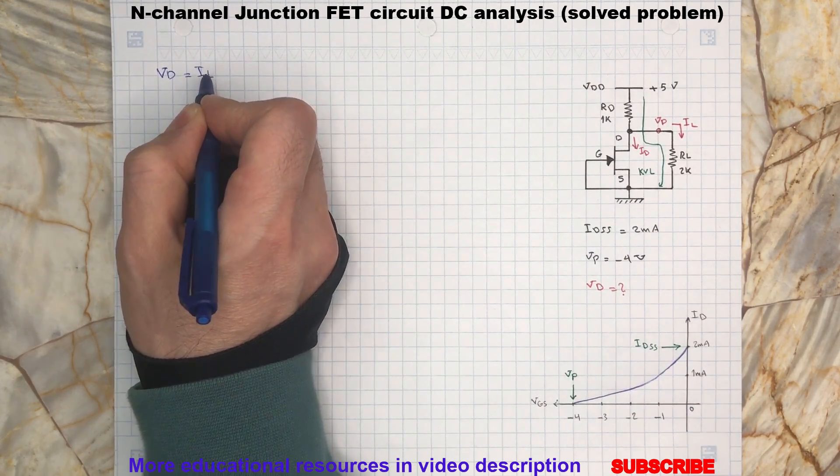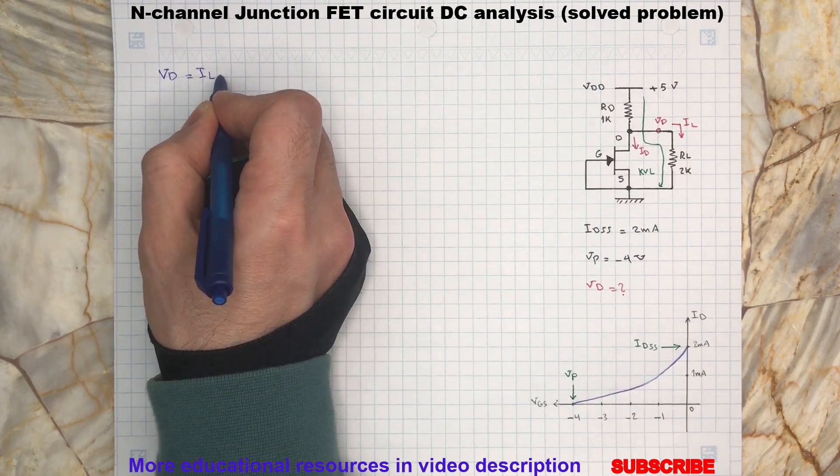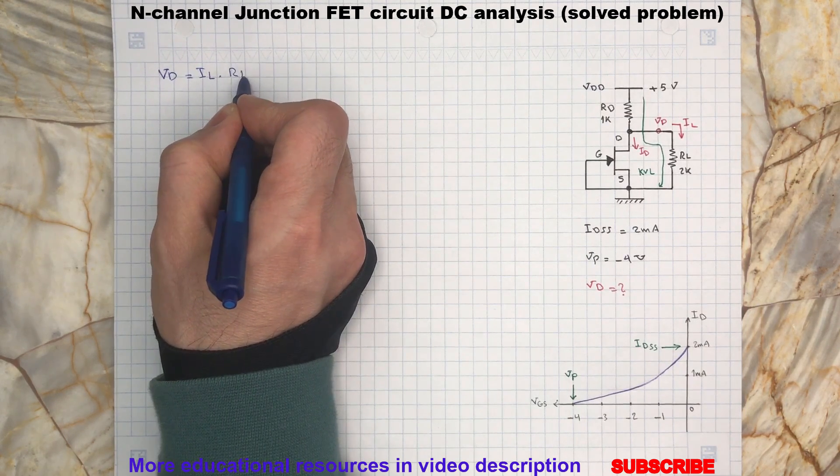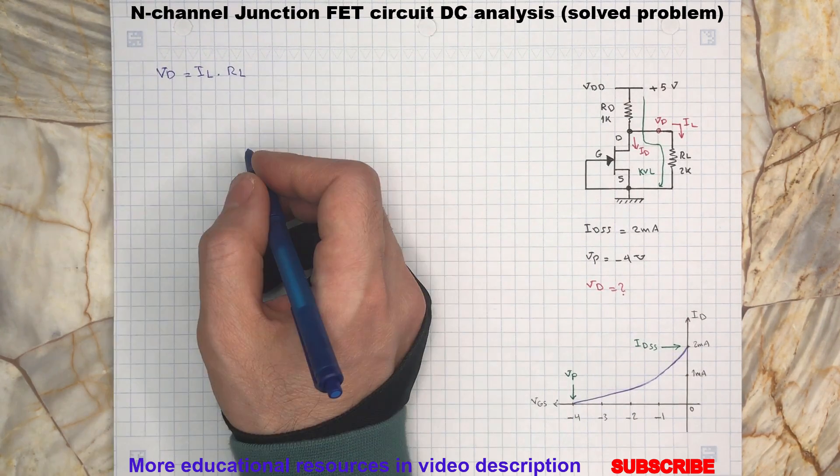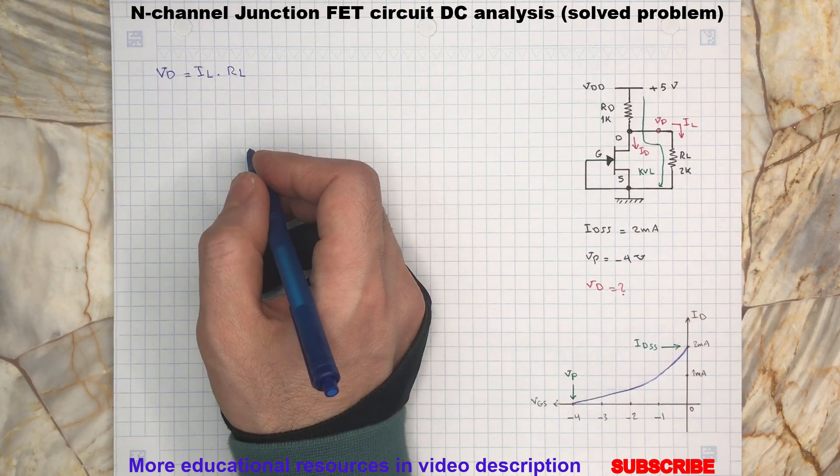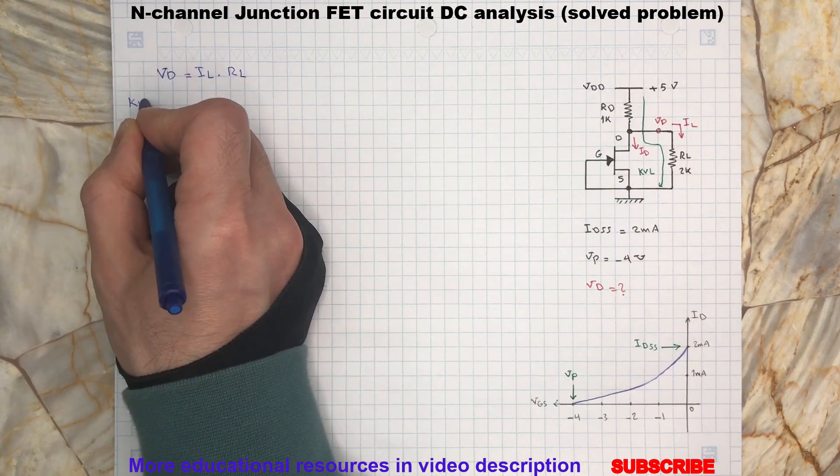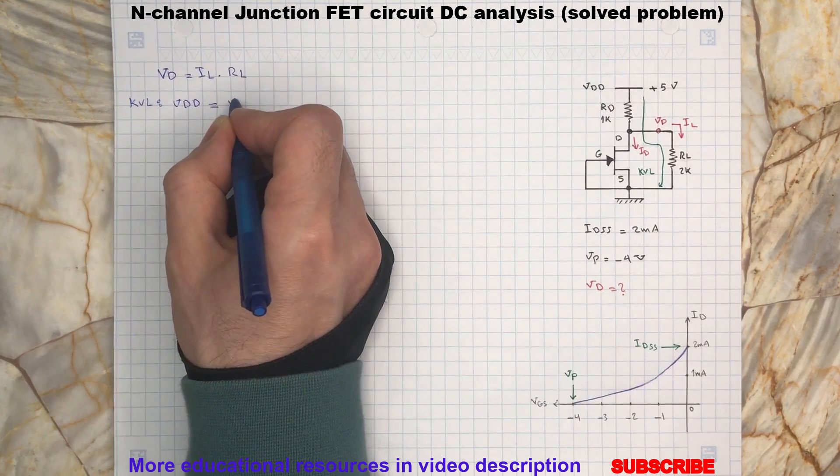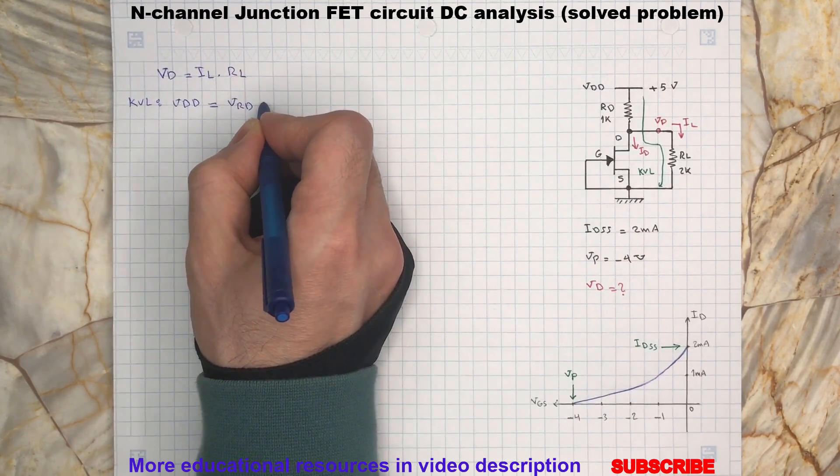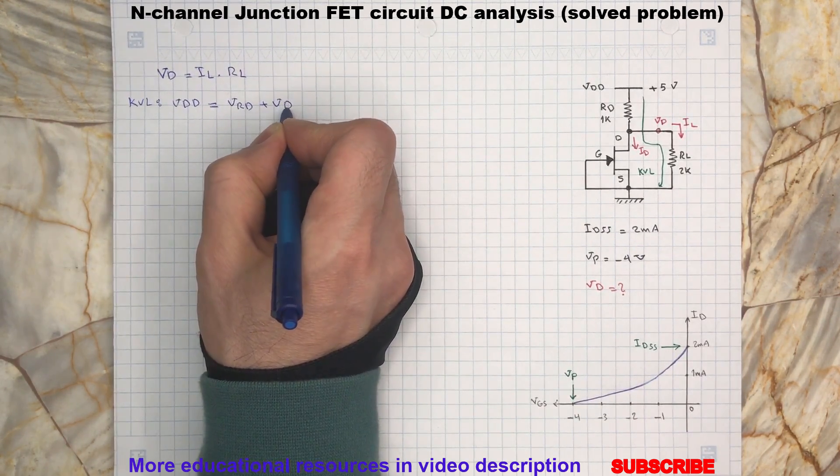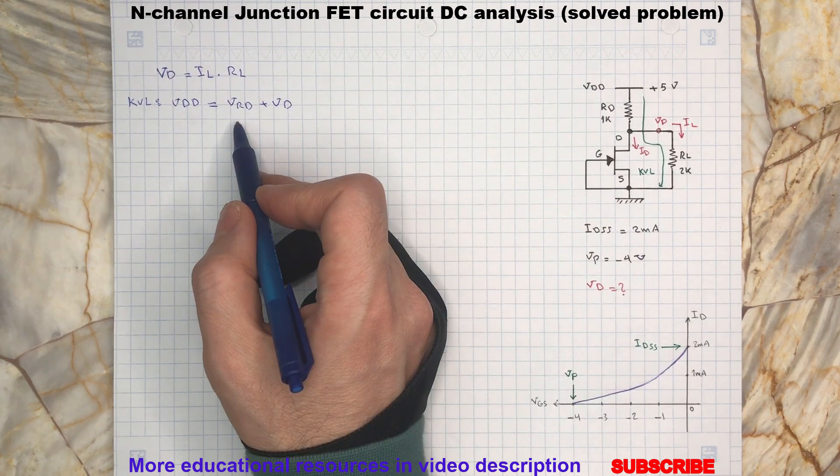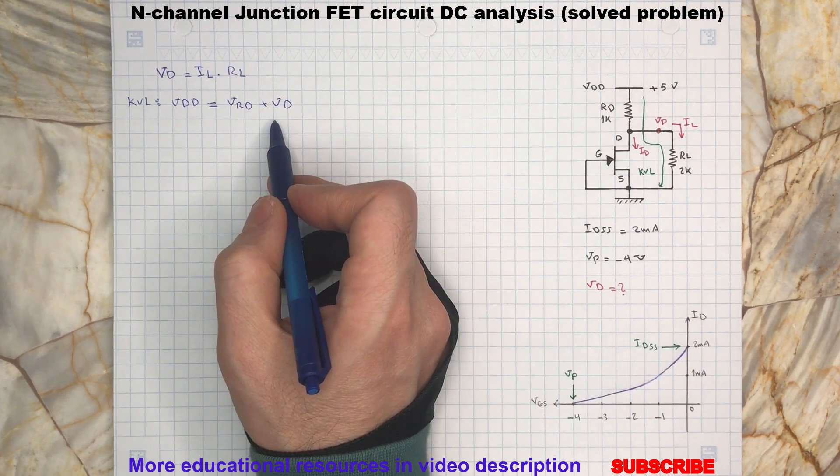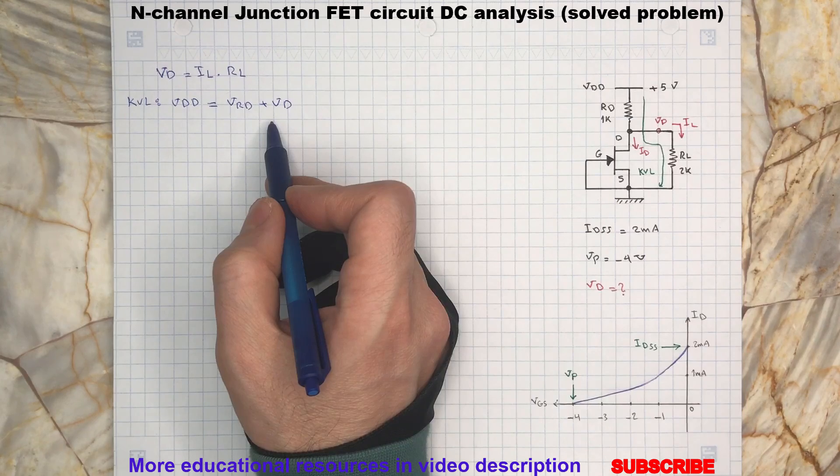can be calculated by IL multiplied by RL. By the KVL we have VDD = VRD + VD, where VRD is the voltage across RD and VD is the voltage across RL.